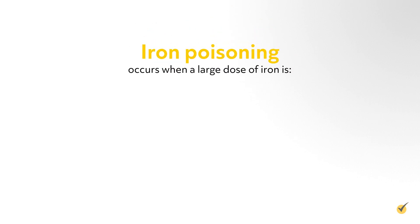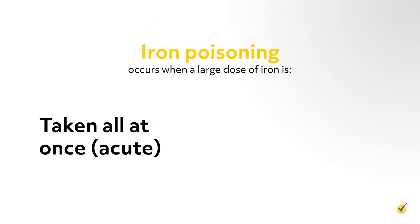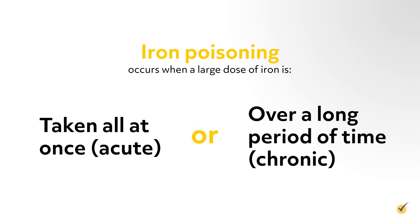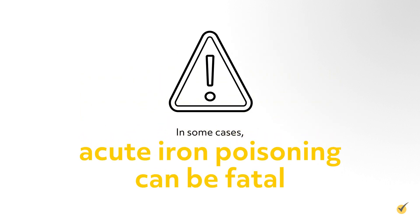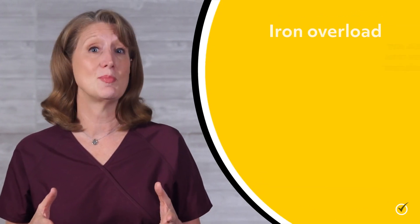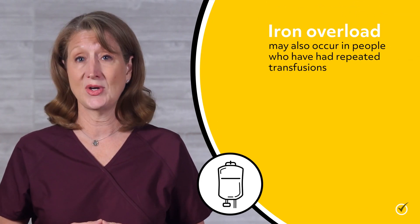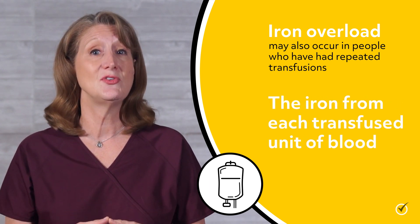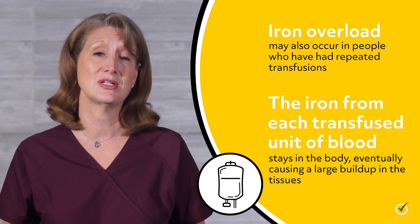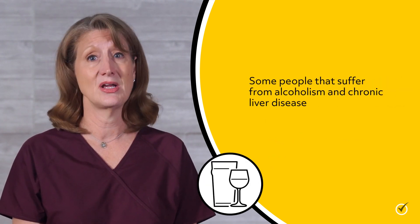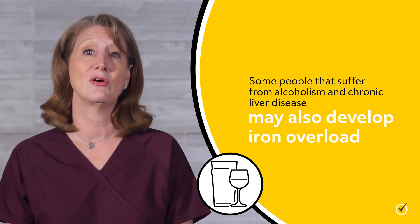Iron poisoning occurs when a large dose of iron is taken all at once — acute — or over a long period of time — chronic. Iron poisoning in children is almost always acute, often occurring in children who ingest their parents' iron supplements. In some cases, acute iron poisoning can be fatal. Iron overload may also occur in people who have had repeated transfusions, as the iron from each transfused unit of blood stays in the body, eventually causing a large buildup in the tissues. Some people who suffer from alcoholism and chronic liver disease may also develop iron overload.